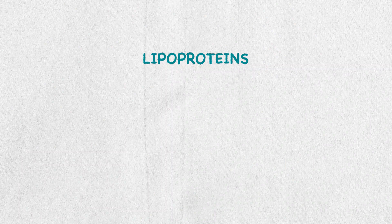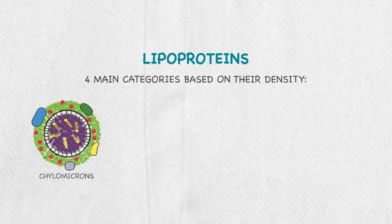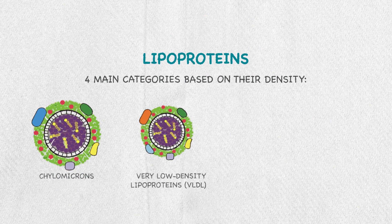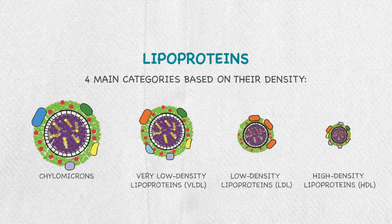These lipoproteins can be divided into four main categories based on their density. First we have the chylomicrons, second very low density lipoproteins, third low density lipoproteins, and finally high density lipoproteins.